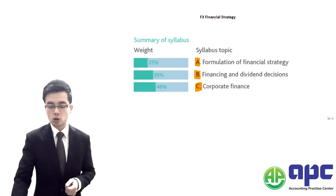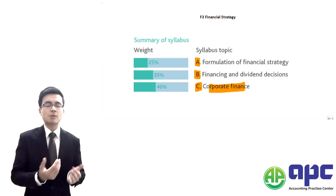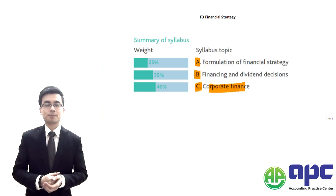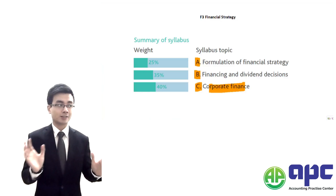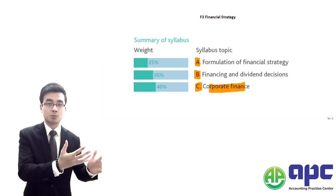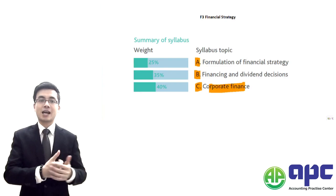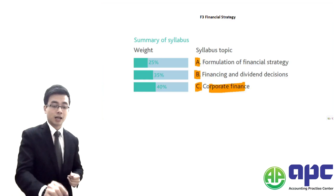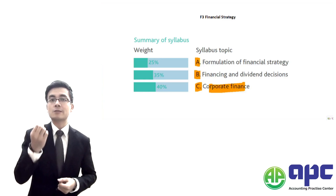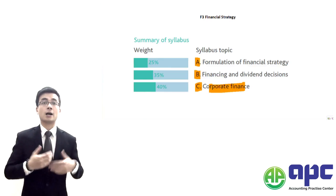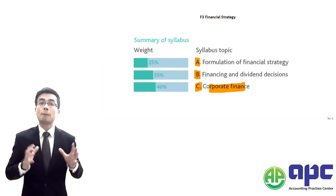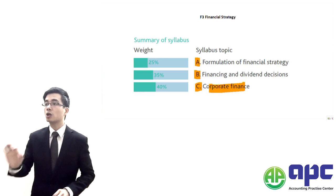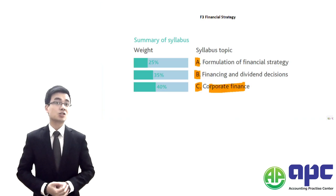Finally, Section C covers corporate finance. The name is a little confusing, but what Section C is about is that you want to buy another company — because you think it's profitable. Before you buy it, you have to value that company; you need to know its worth before spending your money. So Section C covers business valuation, using technical calculations to determine that value, going through the full process from start to end, and also managing the post-transaction issues after buying the company.